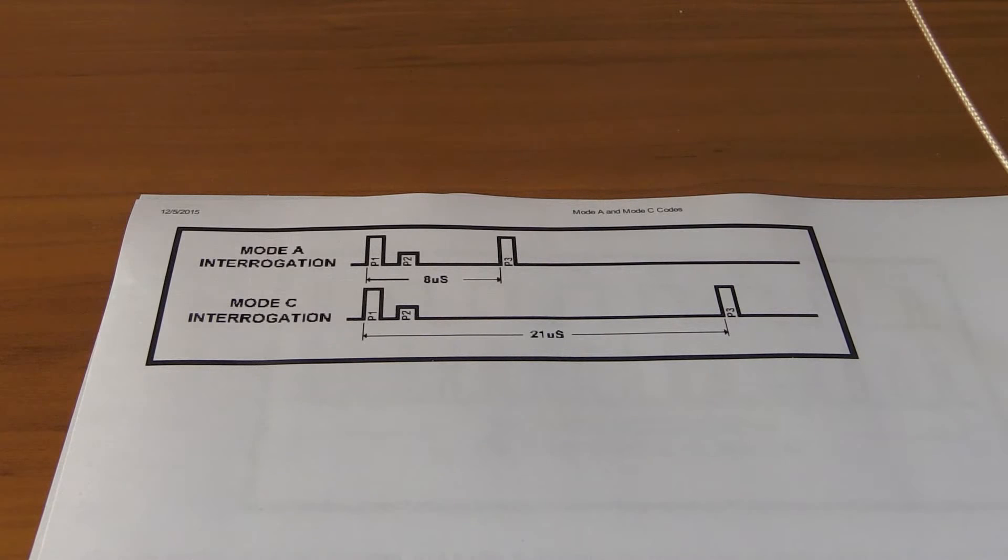The way it works is the antenna sends an interrogation signal on a frequency, and then the airplane responds on a different frequency with all kinds of information. At the very least, the aircraft responds with a four-digit number that has previously been assigned by air traffic control, and this is called mode A.